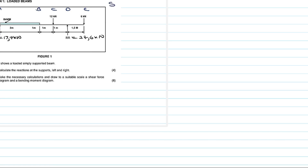Shear force at point A: all forces going upwards are positive, all forces going downwards are negative. The force on point A going upwards is the reaction R_L, which we calculated in the previous video. That gives us positive 17.4 kilonewtons.